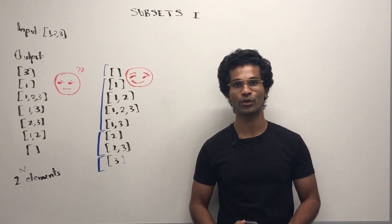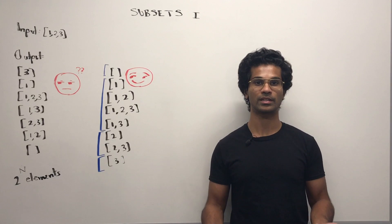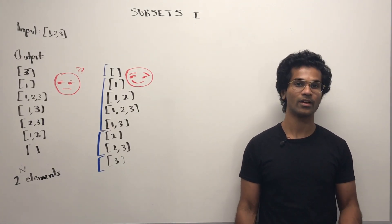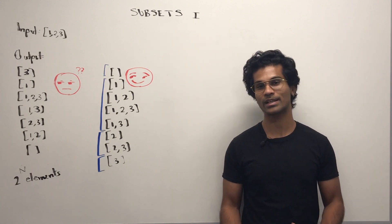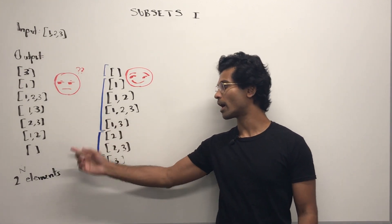The input is going to be an array of distinct integers and our job is to generate all the subsets. Now because it's going to be distinct, we can just call it a power set and know that we will have 2 power n elements in our output.